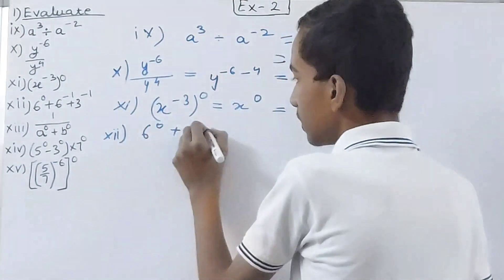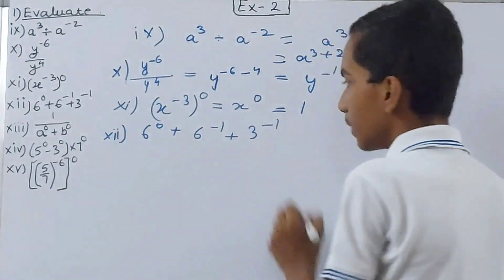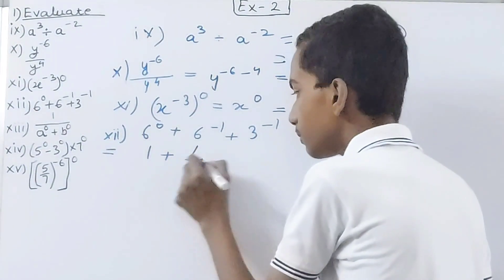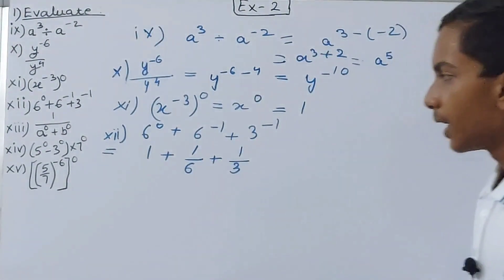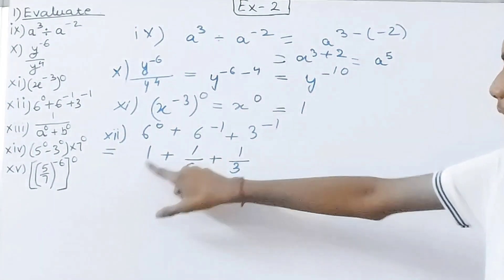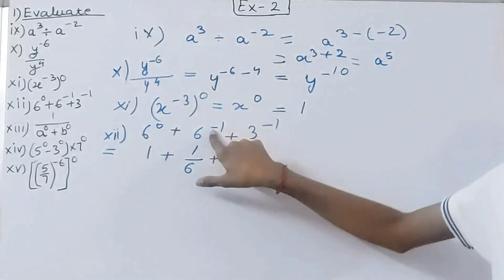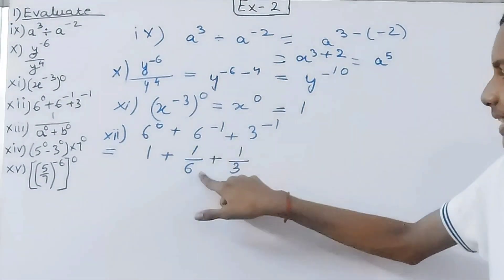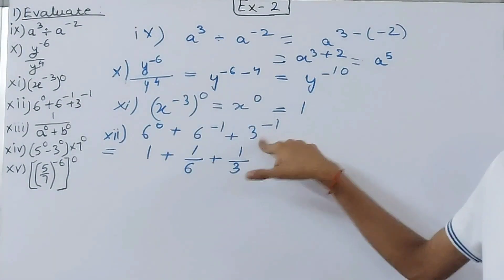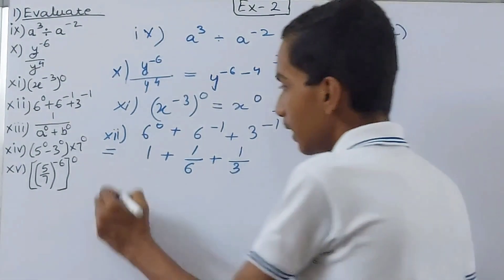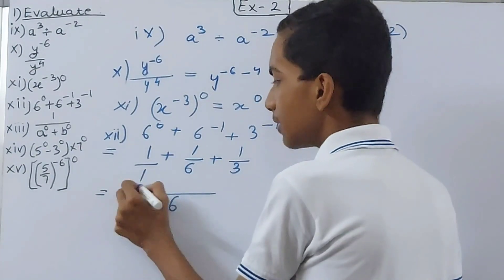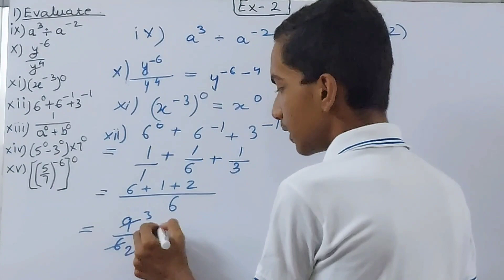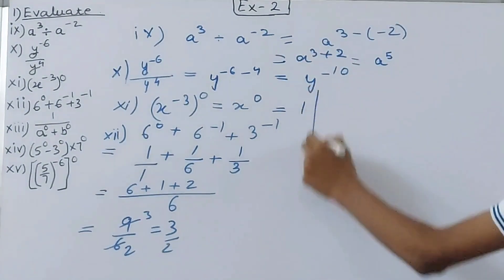The 12th part is 6 to the power 0 plus 6 to the power minus 1 plus 3 to the power minus 1. Simplify each term: 6 to the power 0 is 1; 6 to the power minus 1 is 1 over 6; 3 to the power minus 1 is 1 over 3. Adding them: 1 plus 1/6 plus 1/3. Finding LCM gives 6/6 plus 1/6 plus 2/6 equals 9/6, which simplifies to 3/2.